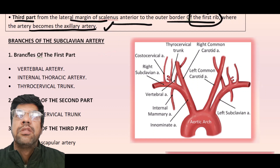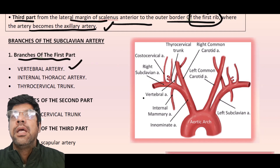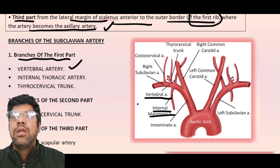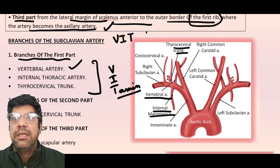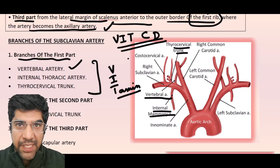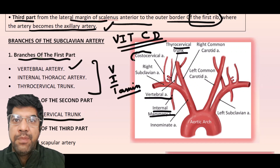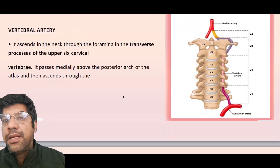The branches of the subclavian artery: the first part gives the vertebral artery, the internal thoracic artery, and the thyrocervical trunk. A useful mnemonic to remember these is 'VIT' — Vertebral, Internal thoracic, Thyrocervical. The second part gives the costocervical trunk, and the third part gives rise to the dorsal scapular artery.